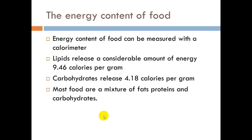The energy content of food can be measured with a calorimeter. Lipids release a considerable amount of energy when metabolized — 9.46 calories per gram. Carbohydrates release 4.18 calories per gram, giving us about 36 ATP molecules through glycolysis. Lipid metabolism produces acidic ketones as byproducts, while glucose from glycogen is a bit cleaner when insulin is present and we can oxygenate it through the electron transport system. Overall, we do get more calories and more energy from fat.